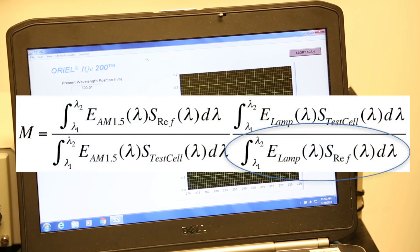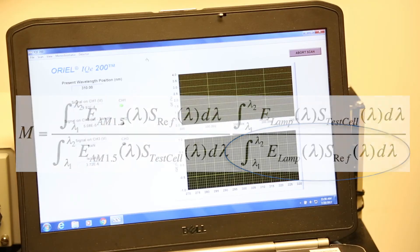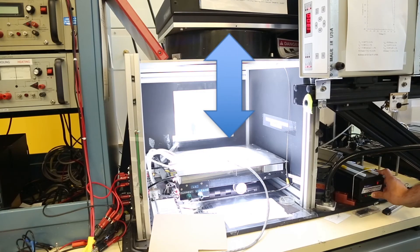Next, measure the short circuit current of the reference cell with the light source you have. If it doesn't match with the ISC obtained in step one, adjust the intensity of your source. You can do this by adjusting the distance between the source and the sample.